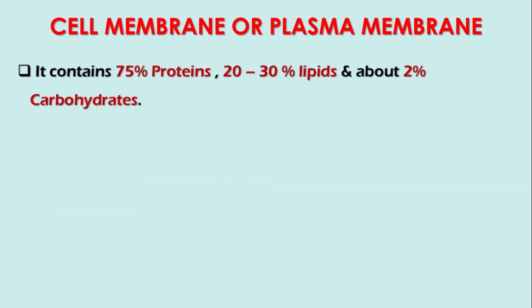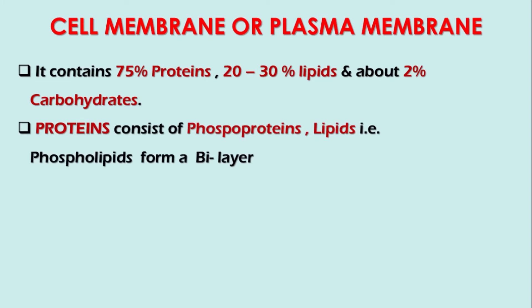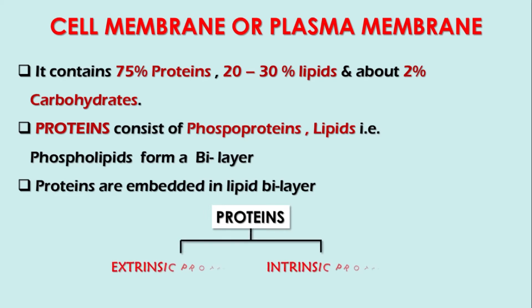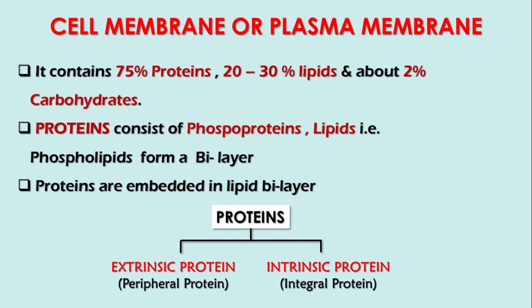The major component of the plasma membrane is proteins, while other components include lipids and carbohydrates. It contains approximately 75% proteins, 20 to 30% lipids, and about 2% carbohydrates. The proteins are mainly phosphoproteins and the lipids are phospholipids, which form a lipid bilayer — the major structural component of the cytoplasmic membrane. The proteins embedded in the lipid bilayer are of two types: extrinsic proteins, also known as peripheral proteins, and intrinsic proteins, also known as integral proteins.